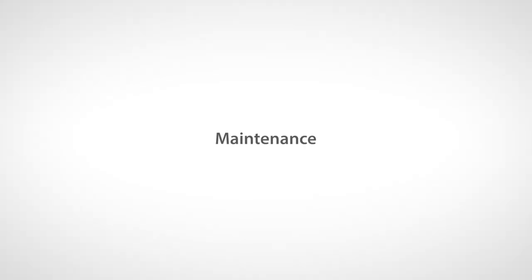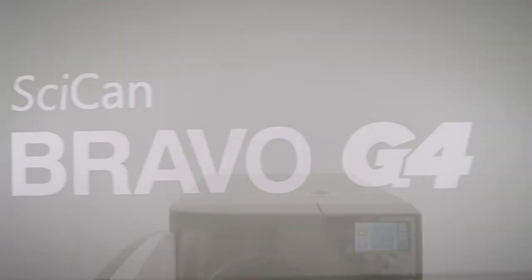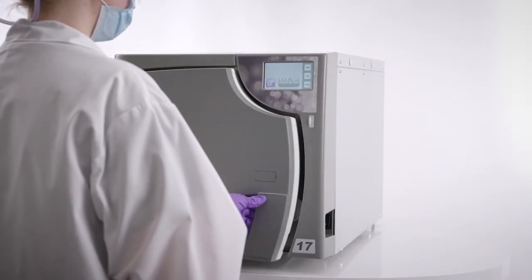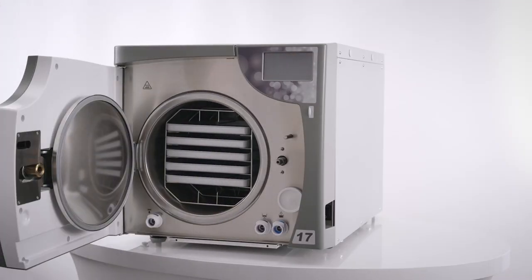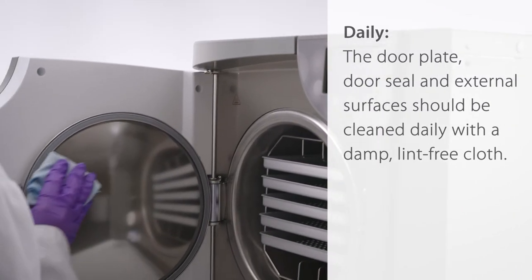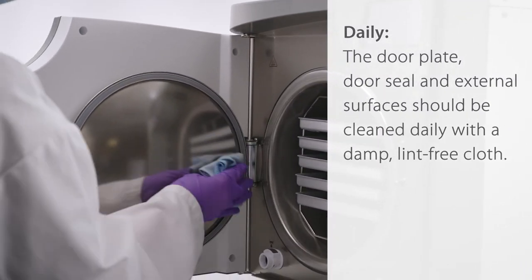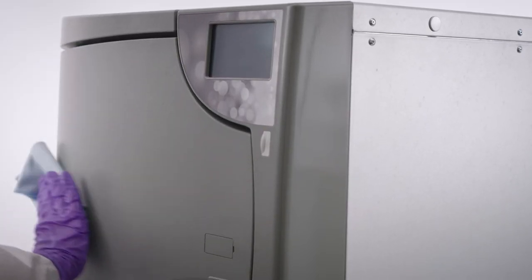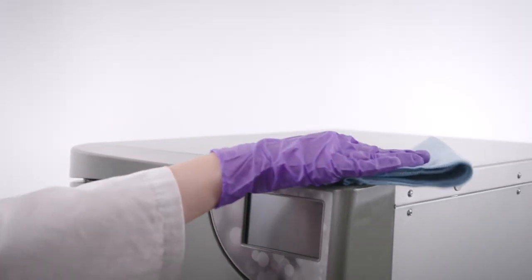Regular maintenance will help to ensure safe and efficient operation of the Bravo G4 over the device's life. When performing any maintenance on the unit, remember that the unit's default standby mode is to maintain a hot chamber while turned on. Before cleaning the door and chamber, open the door and turn the unit off. Allow adequate time to cool before performing maintenance. Daily, the door plate, door seal and external surfaces should be cleaned with a damp lint-free cloth. Clean all the Bravo G4's external parts using a clean lint-free cloth dampened with water and if needed a mild detergent. Dry the surfaces and remove any residue before powering the unit on.